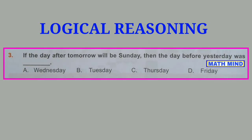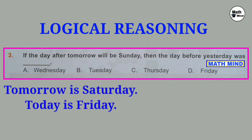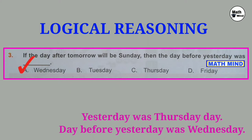Question number 3: If the day after tomorrow will be Sunday, then the day before yesterday was dash. It is said day after tomorrow will be Sunday. It means tomorrow is Saturday, today is Friday, yesterday was Thursday, day before yesterday was Wednesday. So correct option is A.